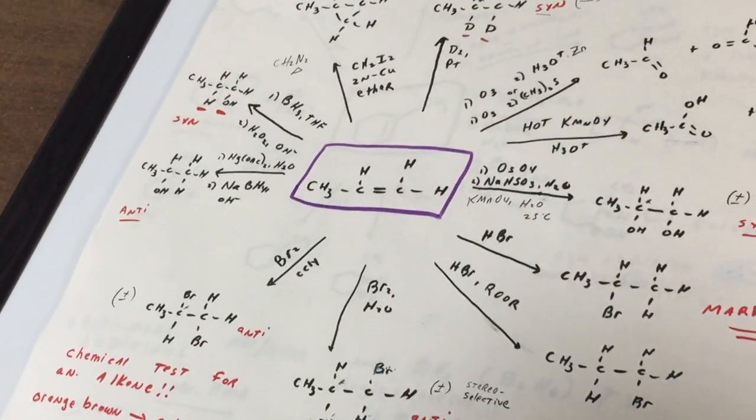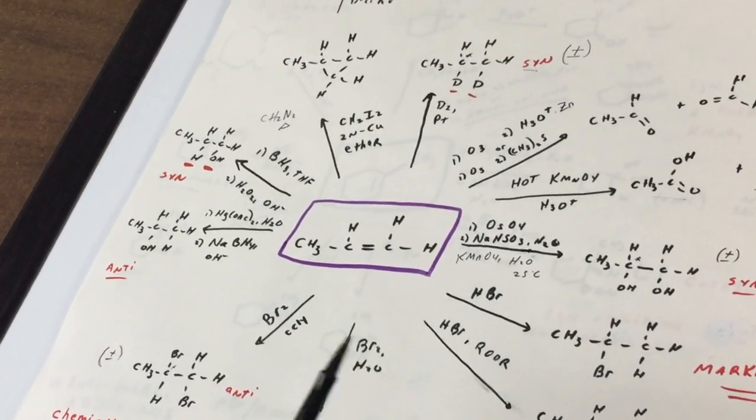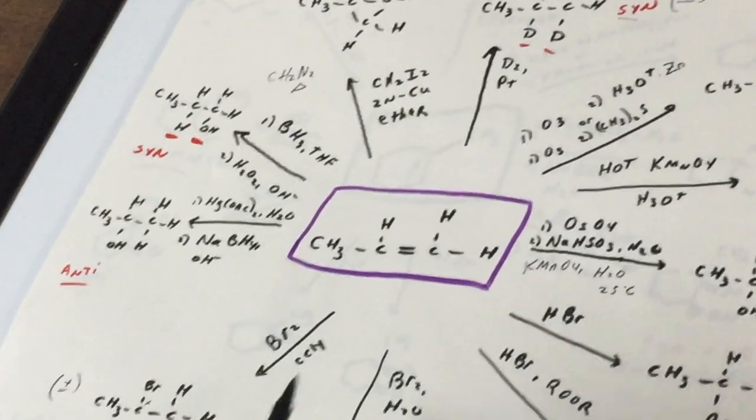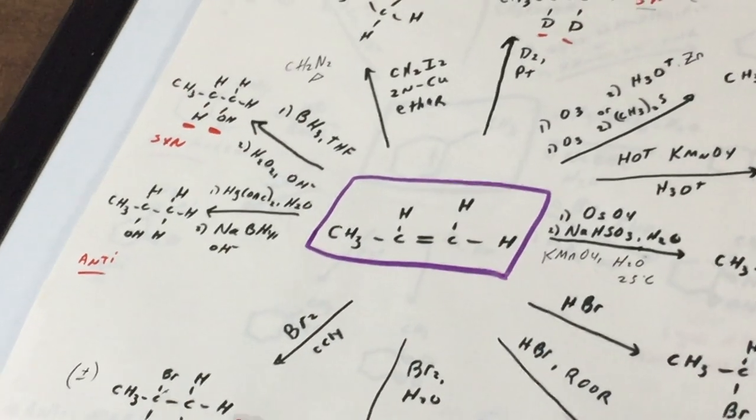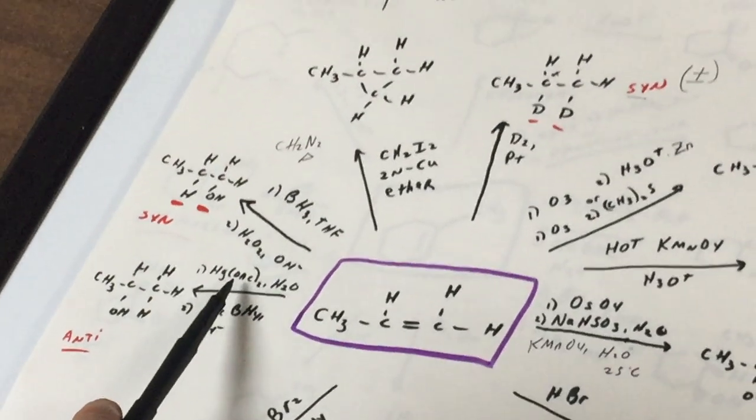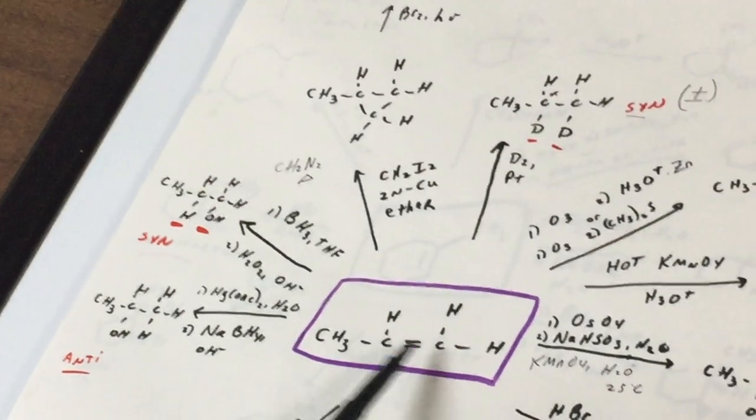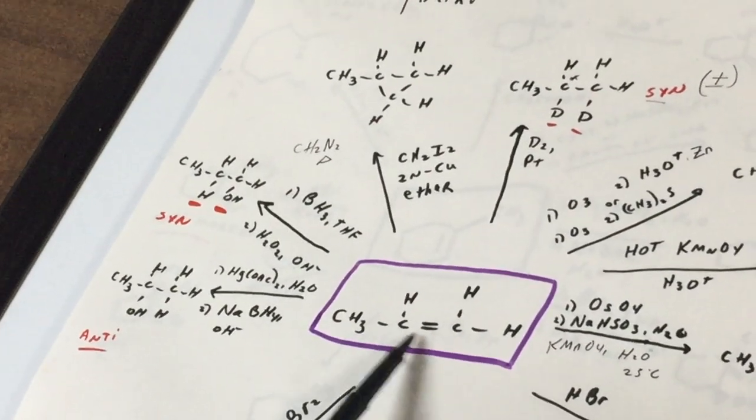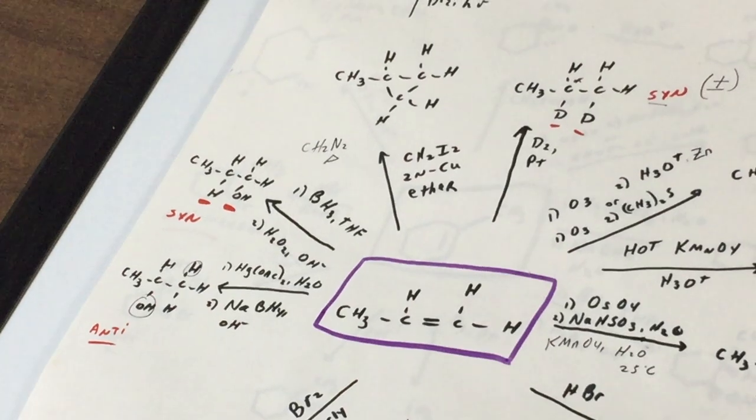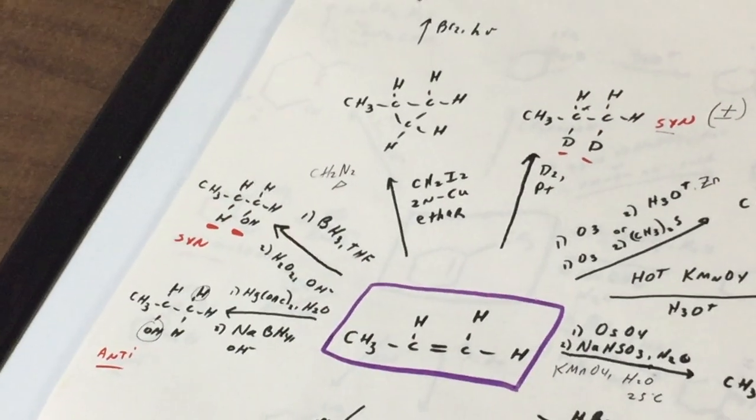In the next example, we're going to do what we call an oxymercuration demercuration. This is one of my favorite ways to add on water to an alkene for the simple reason there's no rearrangement. It proceeds through what we call a mercurinium ion. Check that out when you get to the destroyer. You may thank me for that question someday. When you have Hg(OAc)2, water, NaBH4 on workup. It looks complicated, but all it's going to do, it adds an H and an OH, and the H and the OH you can envision come on from opposite sides. They come on opposite sides, but it's a Markovnikov addition of water, and we get very good yields with that.